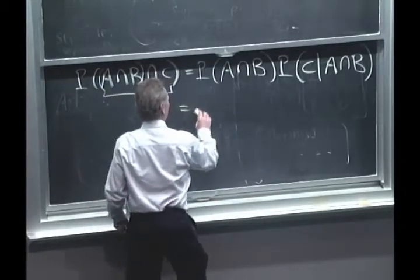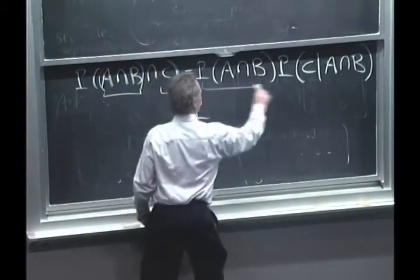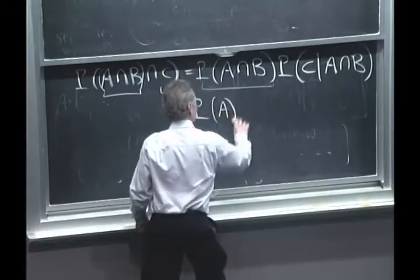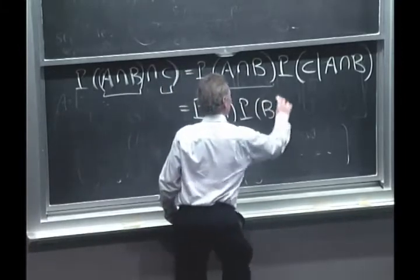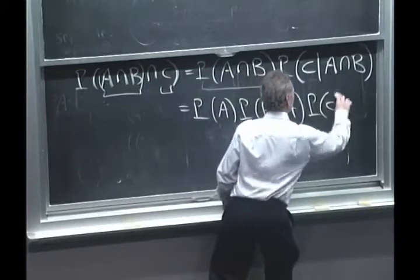And then we use the definition of conditional probabilities once more to break this apart and make it P(A), P(B|A), and then finally, the last term.